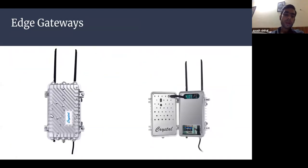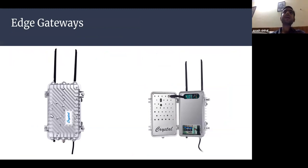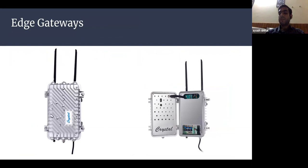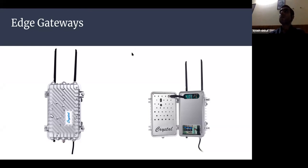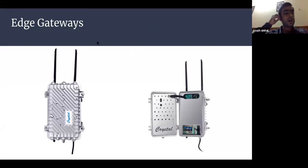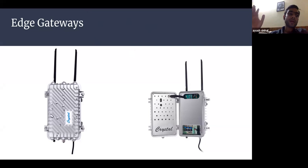Our edge gateway is designed, manufactured by us. It is dual-core with a 1 GHz processor, 2 GB RAM, and around 15 GB of onboard memory. It has 4G connectivity for the northbound and RF for the southbound. It also has a four-hour battery backup and is mounted on a pole. The enclosure is IP65-rated — a rugged device that can endure field conditions continuously for 10 to 12 years.